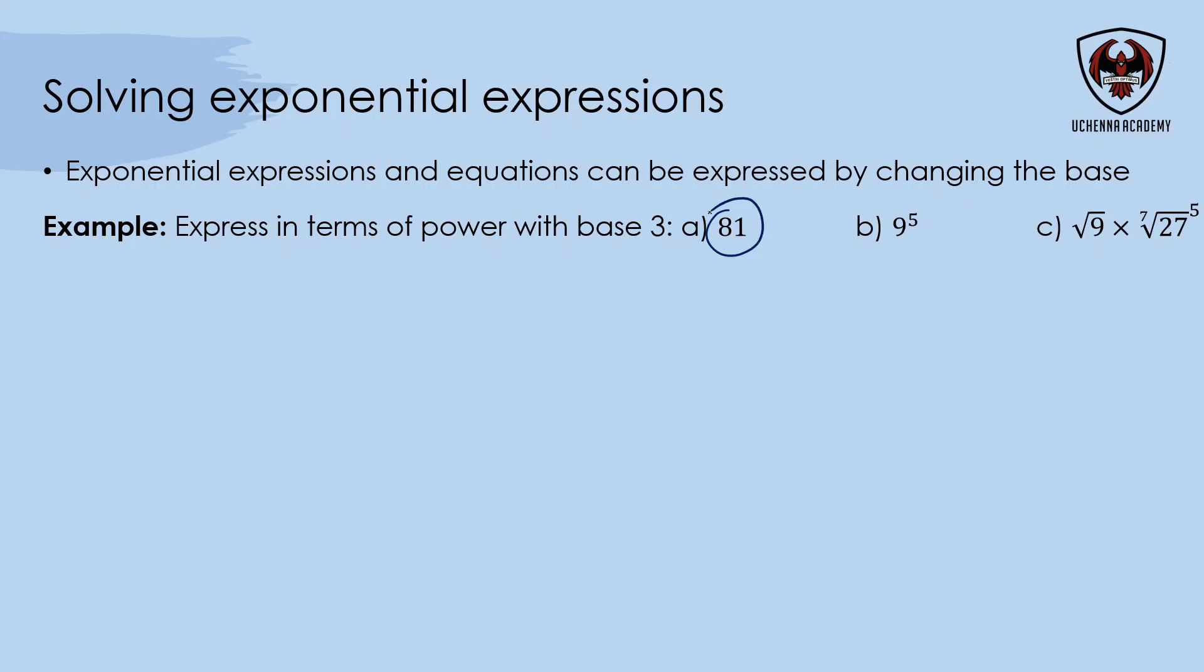Moving on to more exponent problems. Number 81 with base 3: that's 3 to the exponent 4. The second one, 9 to the exponent 5 with base 3: 9 can be written as 3 to the exponent 2, and there's the existing exponent 5, so the exponents multiply to get 3 to the exponent 10.